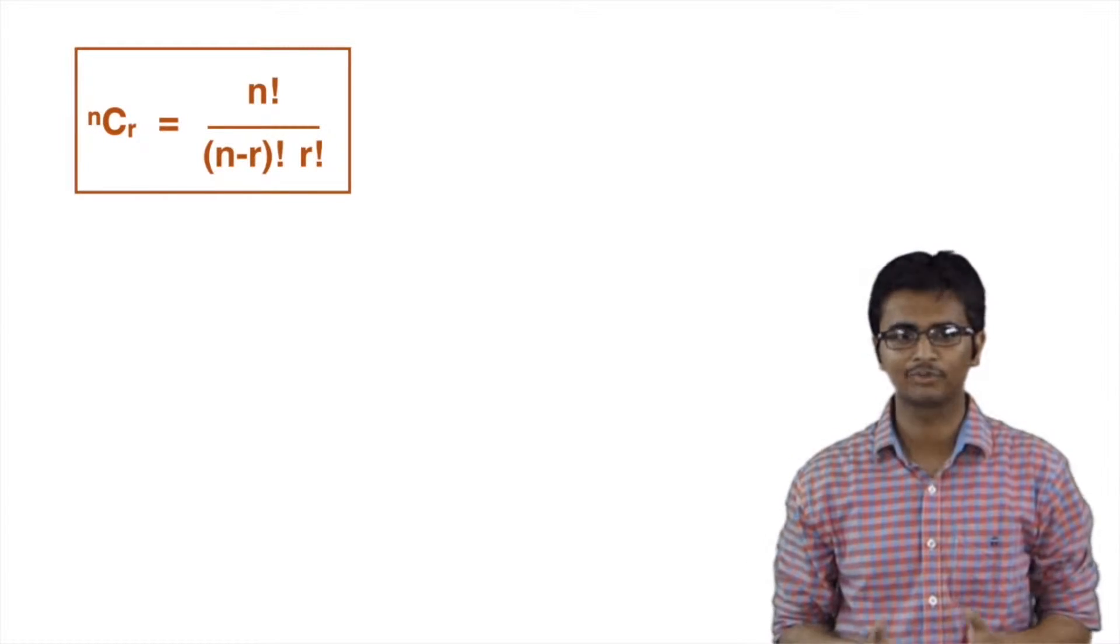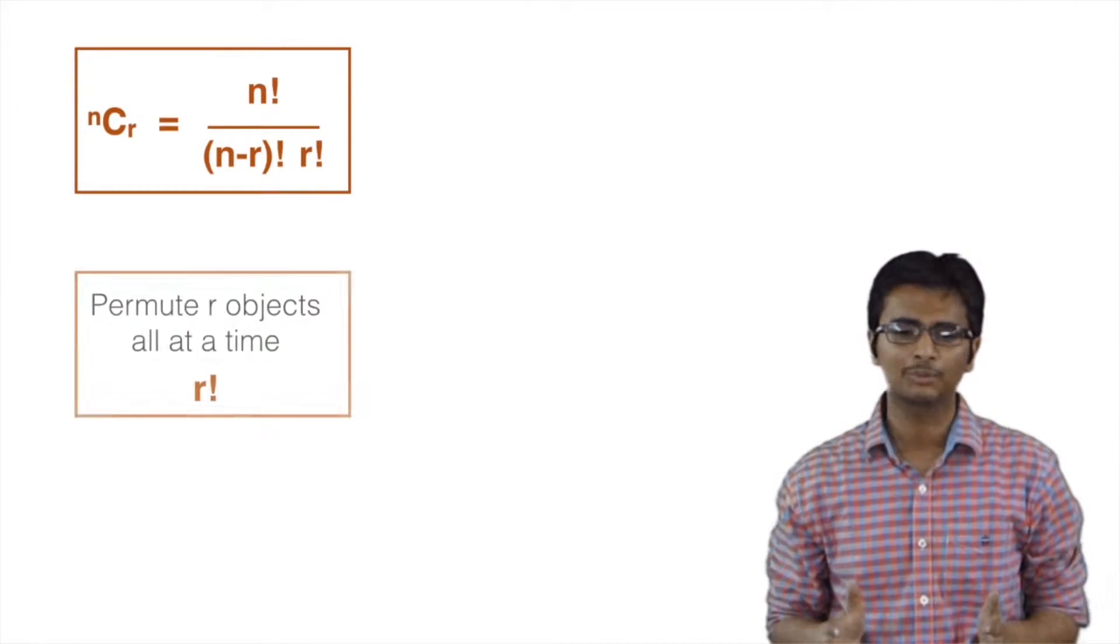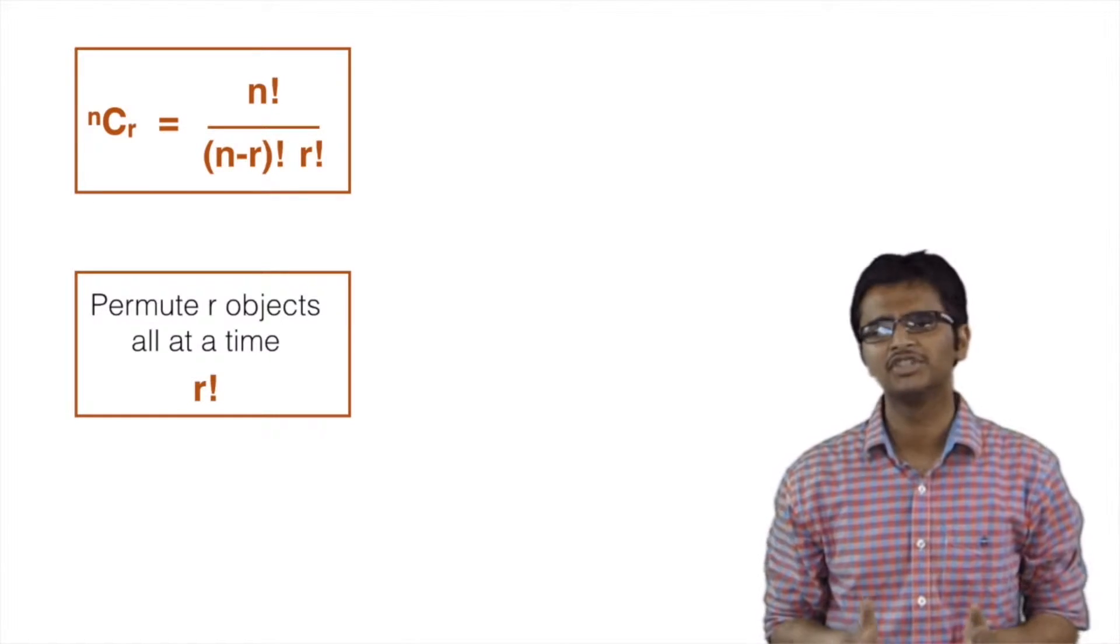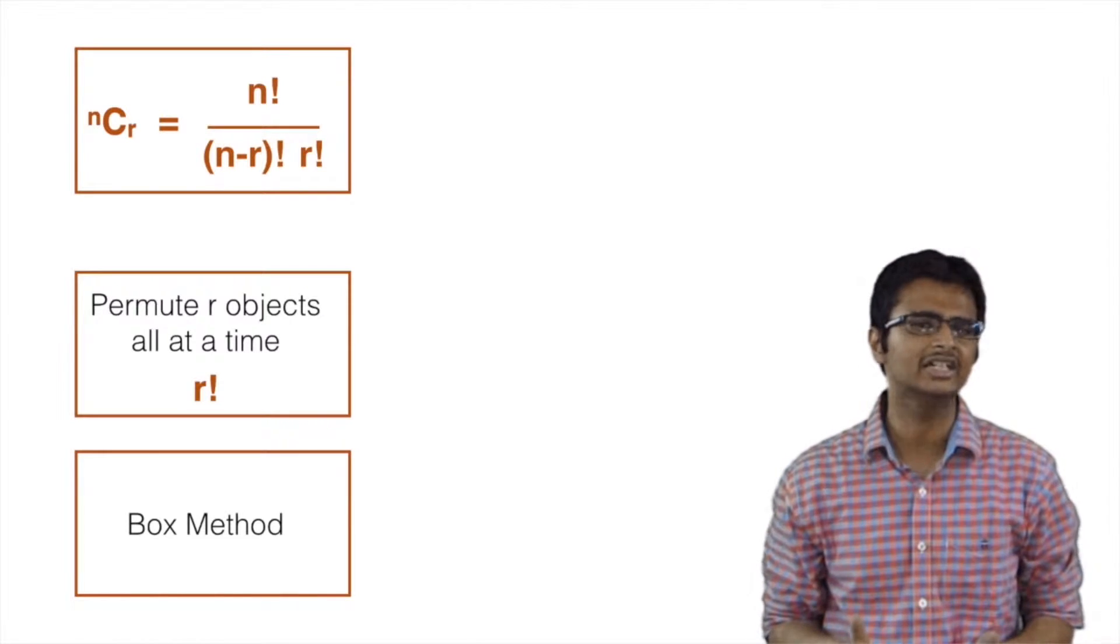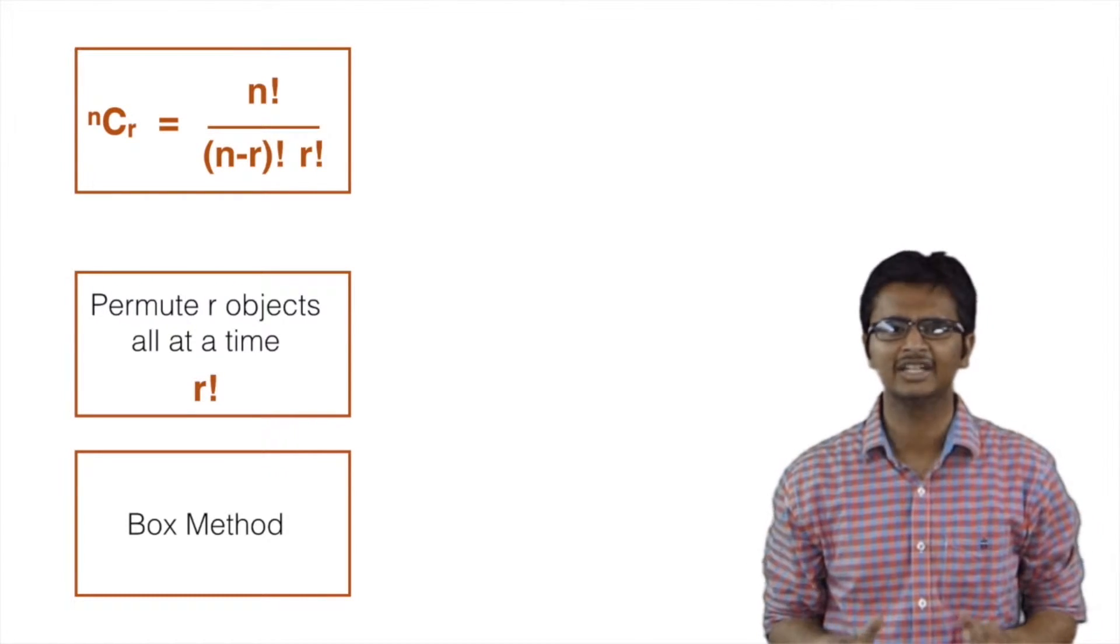The formula NCR, along with the formula for arranging R objects all at a time which is given by R factorial, along with the box method, is all we will be needing to solve most of the problems in this course.